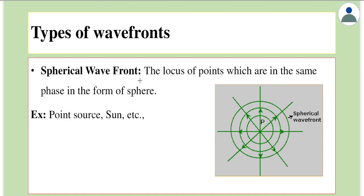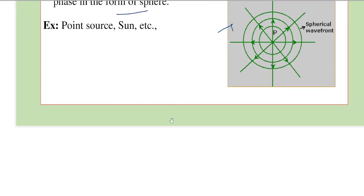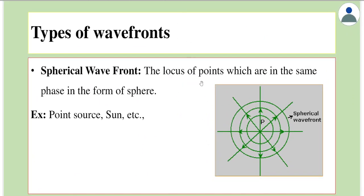A spherical wavefront means the locus of points in the same phase lies on a sphere. What is drawn here is a two-dimensional representation, but think in three dimensions. From a point source, if we go one meter in all directions and connect those points, they form a sphere. That is called a spherical wavefront — all particles in the same phase lie on a sphere.